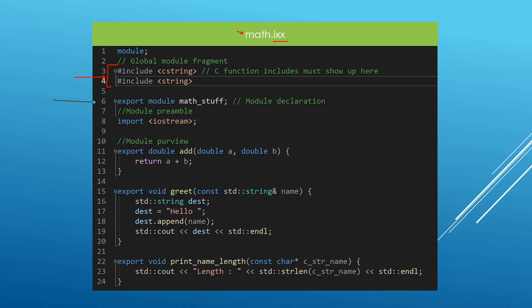After these includes, we have the module declaration. Our module is going to be named math stuff. It is a module declaration because we have export module here. If we don't have the export keyword, it's not a module declaration — it is something else, as we will see later on as we progress in the chapter. After this, we have our import. iostream can be imported across all compilers, so this is going to work. And after this, we have the module purview. In this case, our purview has three functions: add, greet, and print name length. All these functions use different facilities from the things we either include or import. Add returns the sum of two numbers, greet prints a message using std::string, and print name length uses features from the C string header. If we import this module file, we should be able to use either of these functions.